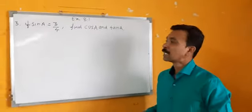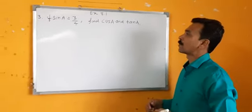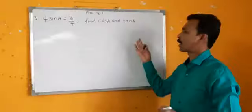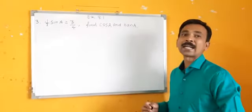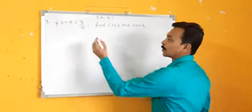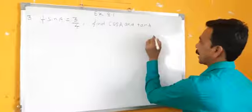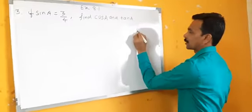Third question. If sin A is equal to 3 by 4, find cos A and tangent. For that, first we have to draw a right angle triangle.